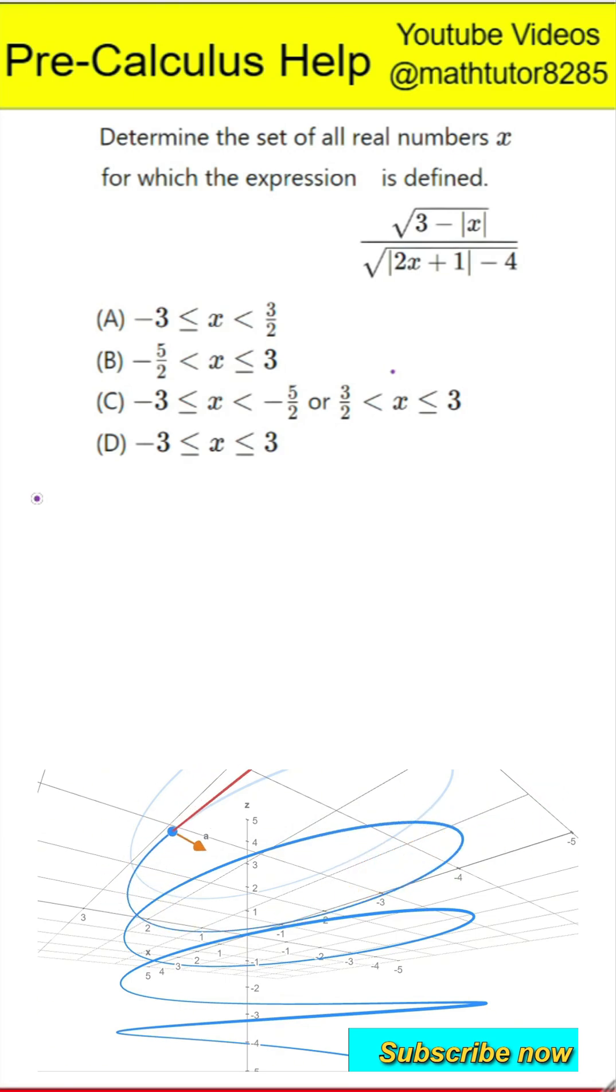Option A: x is between negative 3 and 1.5, including negative 3 but not including 1.5. Option B: x is between negative 2.5 and 3, not including negative 2.5 but including 3.